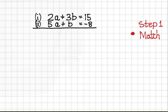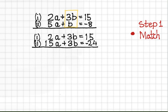Step one will be to match one of the pair of the coefficients. In this case the easier option would be to multiply the second line by 3 so we'll get a matching 3b in line 2 and 3b in line 1. After multiplying the second line by 3 the result is 15a plus 3b is equal to minus 24.